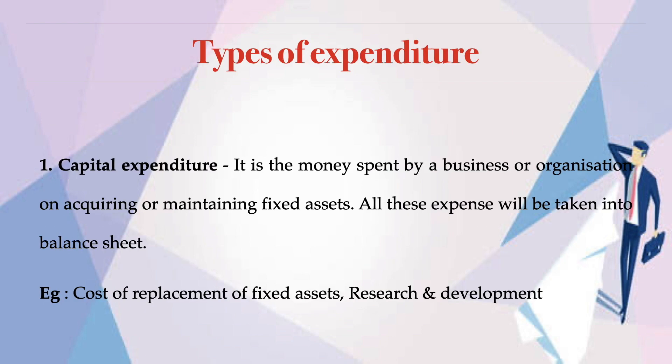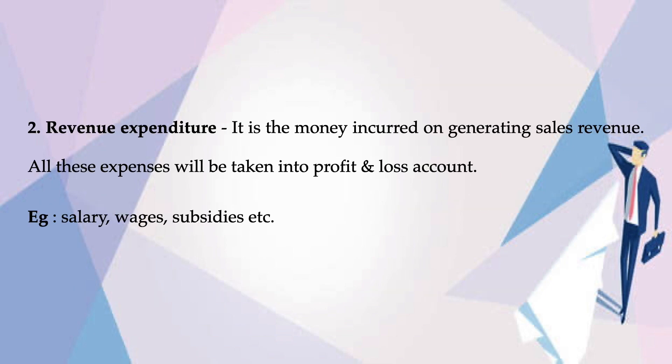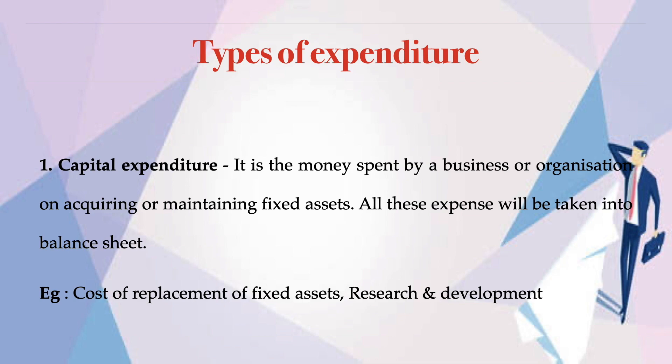We are going to learn two types of expenditures: capital expenditure and revenue expenditure. Capital expenditure is the money spent by a business or organization on acquiring or maintaining fixed assets. All these expenses are taken into the balance sheet.